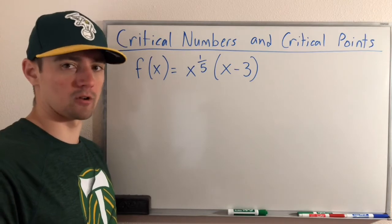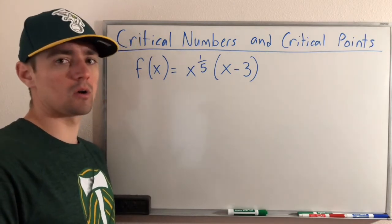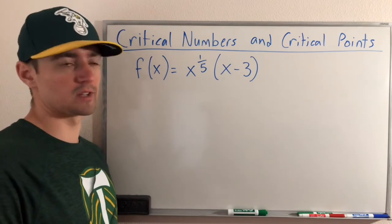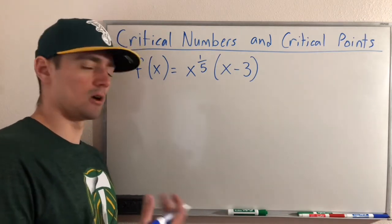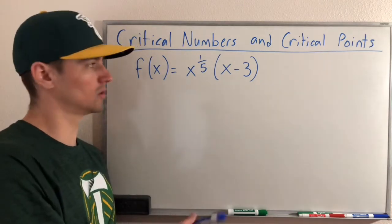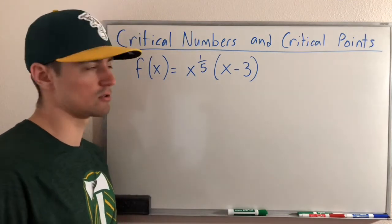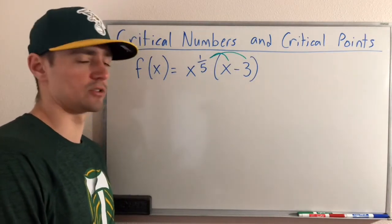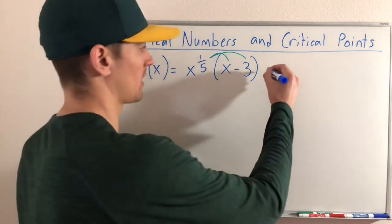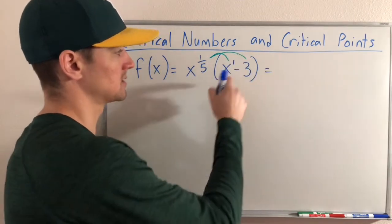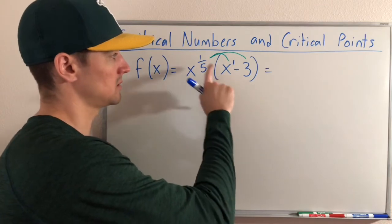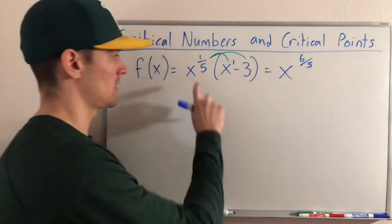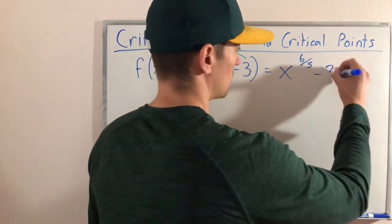To do this, we first need to take the derivative, because we need to find where the derivative equals zero or does not exist. We could use the product rule, but instead we'll distribute x to the 1/5 into each term and use the power rule. So x to the 1/5 times x gives us x to the 6/5 — since 1 plus 1/5 equals 6/5. And then 3 times x to the 1/5 gives us 3x to the 1/5. So our expanded function is x to the 6/5 minus 3x to the 1/5.